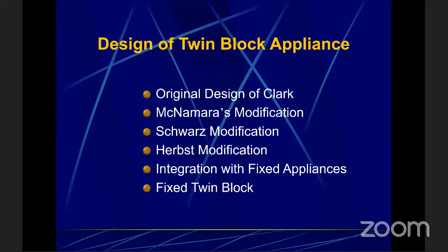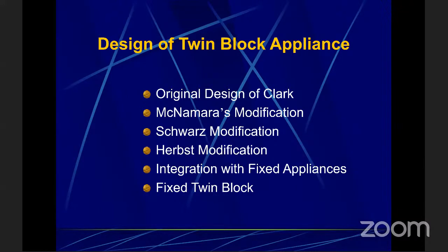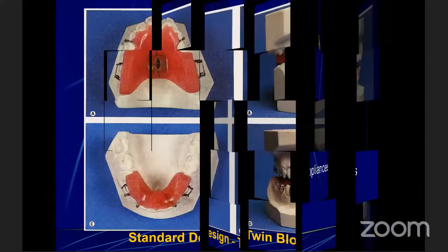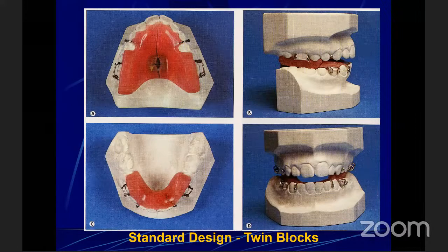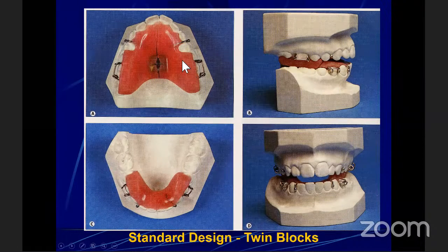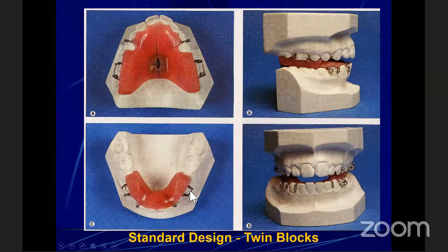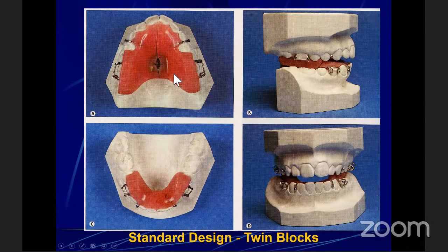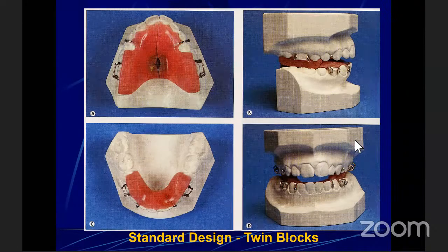There are various designs of the Twin Block appliance. The original Clark design: two appliances with bite blocks meeting at a 70-degree angle. The upper bite block is held by Adams clasp or delta clasp or with pinheads, and the lower is a horseshoe-shaped design with retentive elements. He also put an expansion screw in the middle — the standard design. The height of the bite block determines the extent of vertical opening, and the inclination of the guide planes determines the extent of forward mandibular position. To gain posterior vertical development, the upper bite block is gradually relieved at each visit to allow lower molar eruption, and the 70-degree interface bite ramps lock the mandible in a forward position for Class 2 correction.